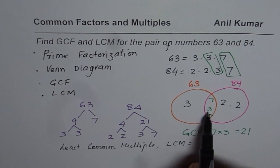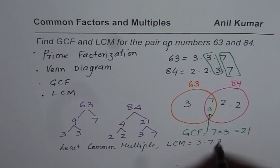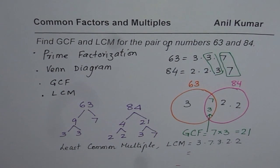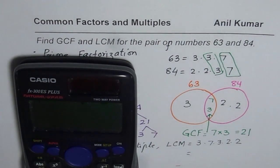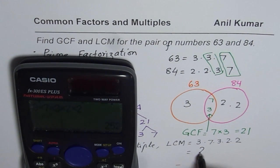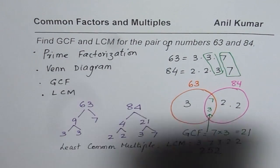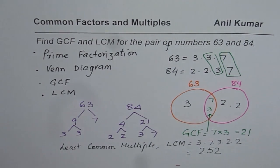That means 3 times 7 times 3 times 2 times 2. So we do 3 times 7 times 3 times 2 times 2. So that gives us the least common multiple. Let us use our calculator to do the same. So it is 3 times 7 times 3 times 2 times 2 and that equals 252. So 252 is the least common multiple.